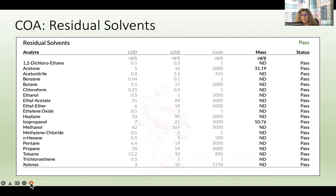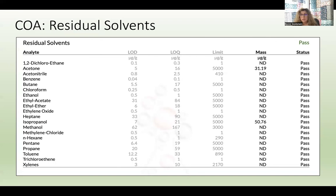Here's residual solvents. This particular test gives a pass, but it did test positive for acetone and isopropanol. The state limit for acetone is 5,000 micrograms per gram, and this sample is very low at 50. The isopropanol limit is also 5,000 and this is similarly low. Although these are small amounts, if you can avoid residual solvents, it is my suggestion that you get the cleanest possible medicine by avoiding solvents and pesticides. All of these tests should be done on every product that you use.